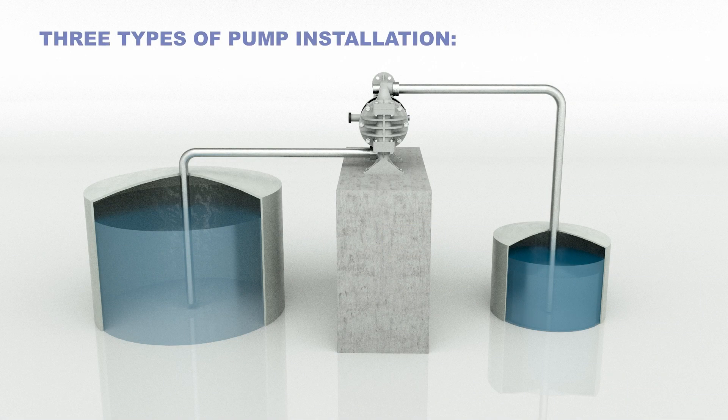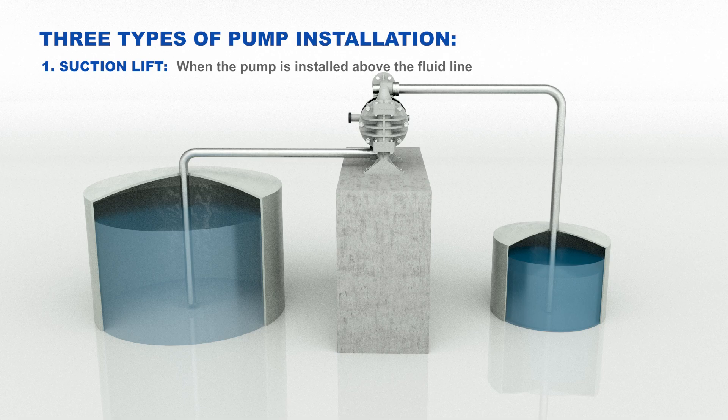Three types of pump installation include suction lift. When the pump is installed above the fluid line, ensure that the suction dry lift capability of the pump exceeds the height difference. Note, be sure to take the specific gravity of fluid into account.